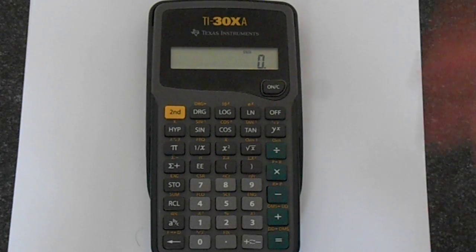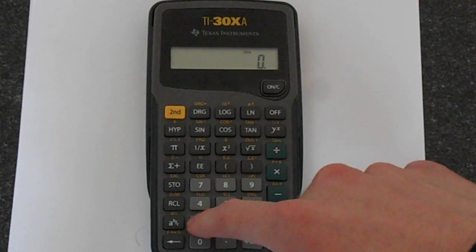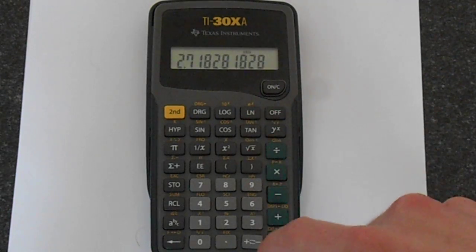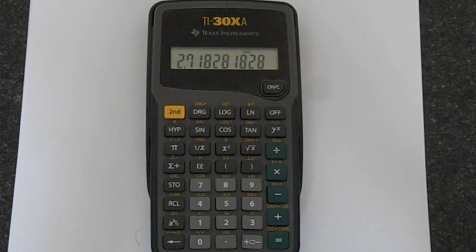So let's just find e to the 1. So that is of course e. So press 1 and then second function, e to the x. And that gives us 2.718. And you should know that that's e.